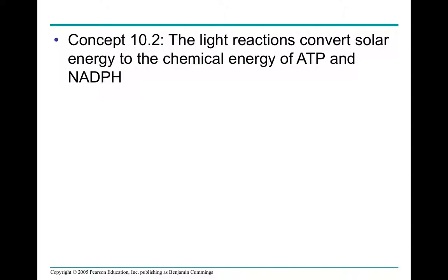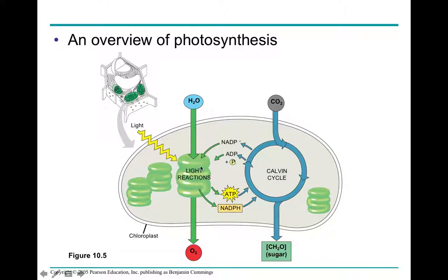Light reactions convert solar energy to the chemical energy of ATP and NADPH. The reason the first stage is called the light reactions is that it requires a source of light to occur. The Calvin cycle can actually continue even after the presence of light is gone, as long as there is enough stored ATP and NADPH to send over — so the Calvin cycle will be able to continue on.